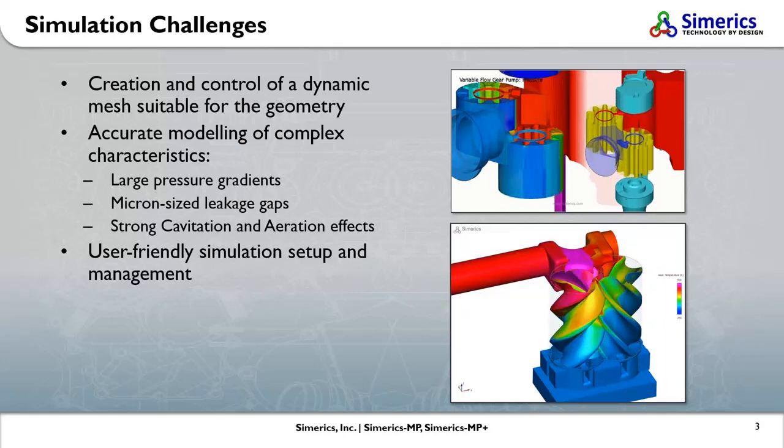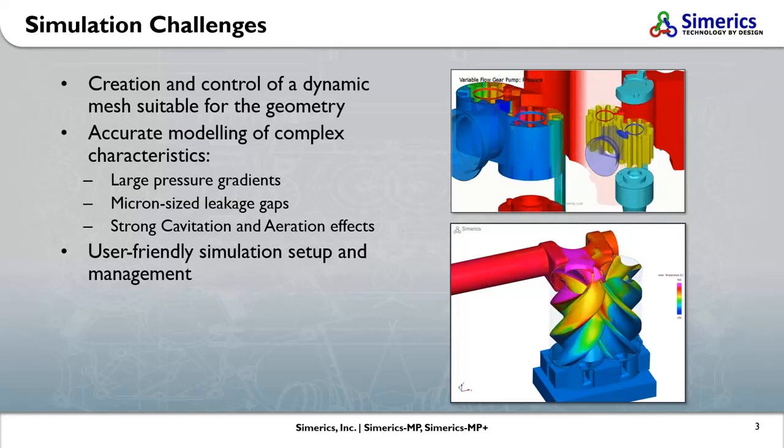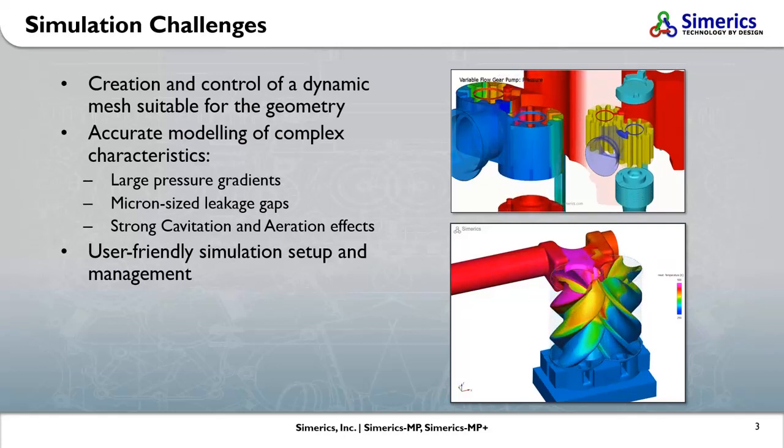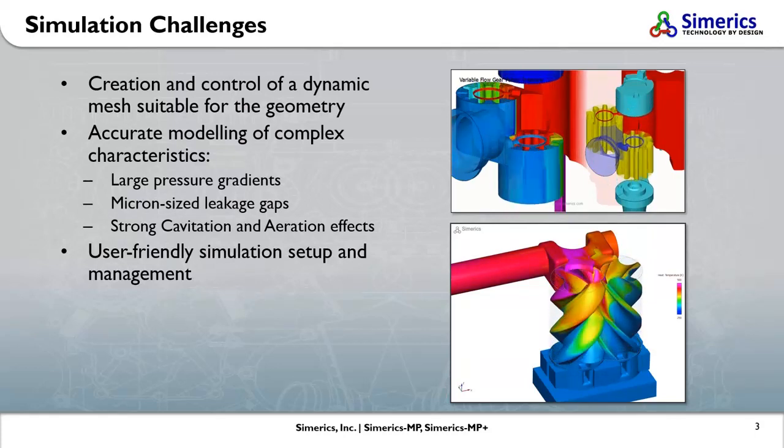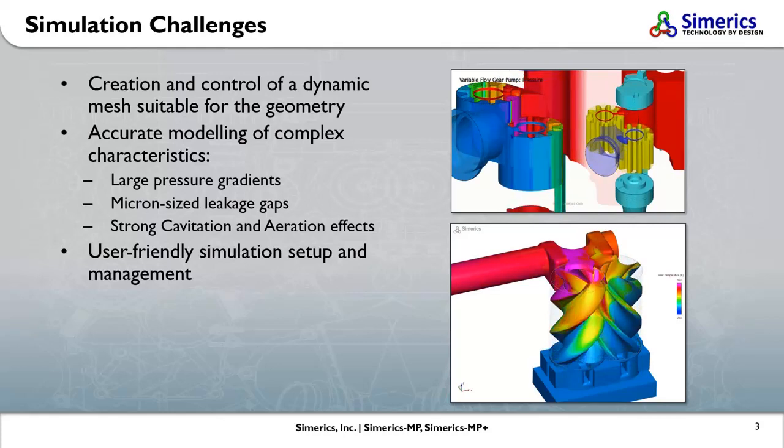Most general purpose moving mesh methods are unsuitable for positive displacement machine simulation. An extremely fine mesh is required to fill these gaps, and can lead to an inefficient mesh with a massive cell count. The number of time steps must also be limited in order to map simulation results from one mesh to the next.